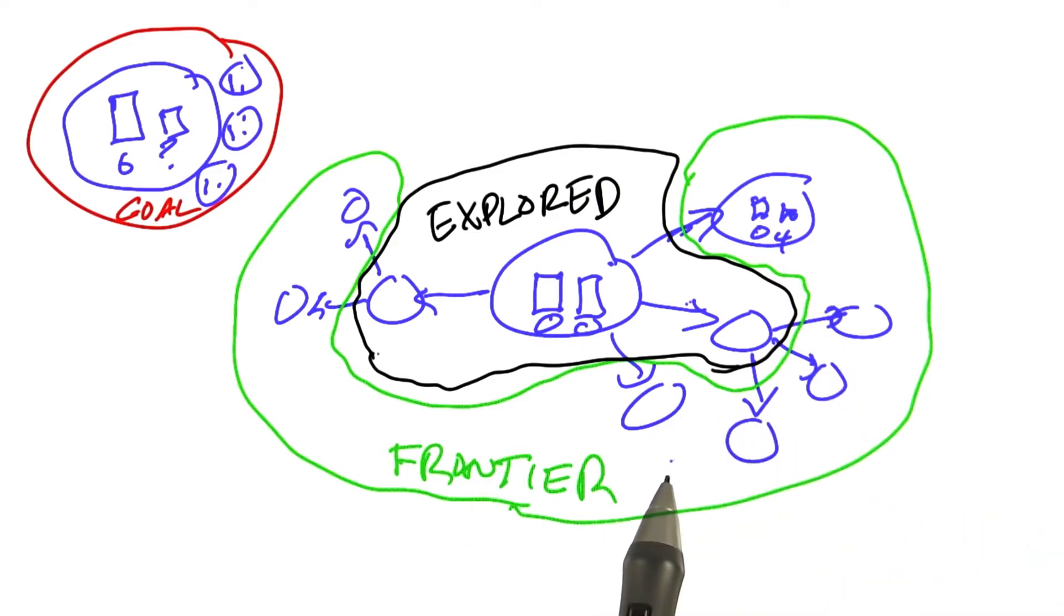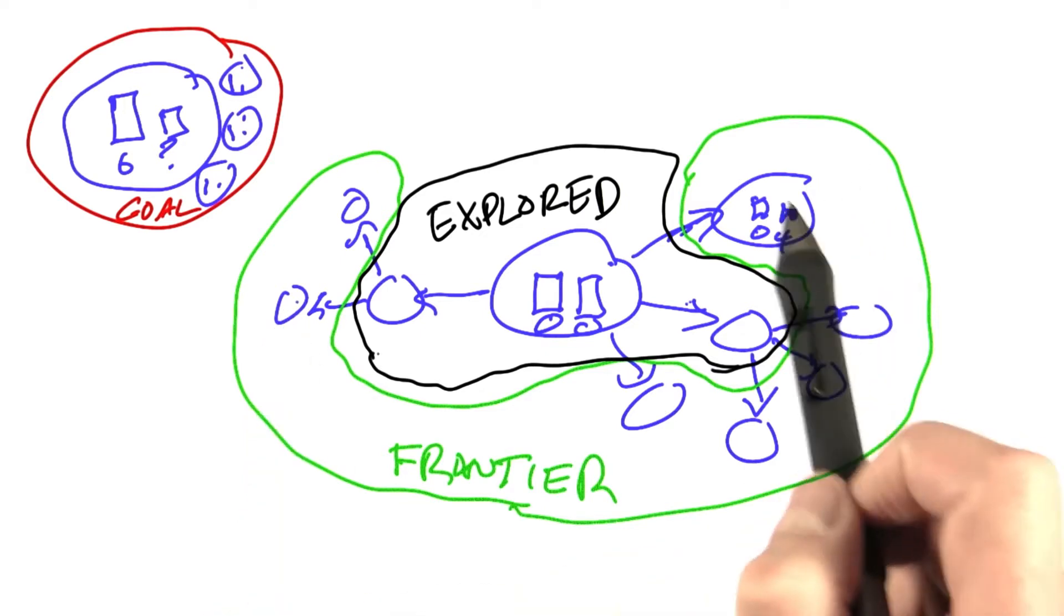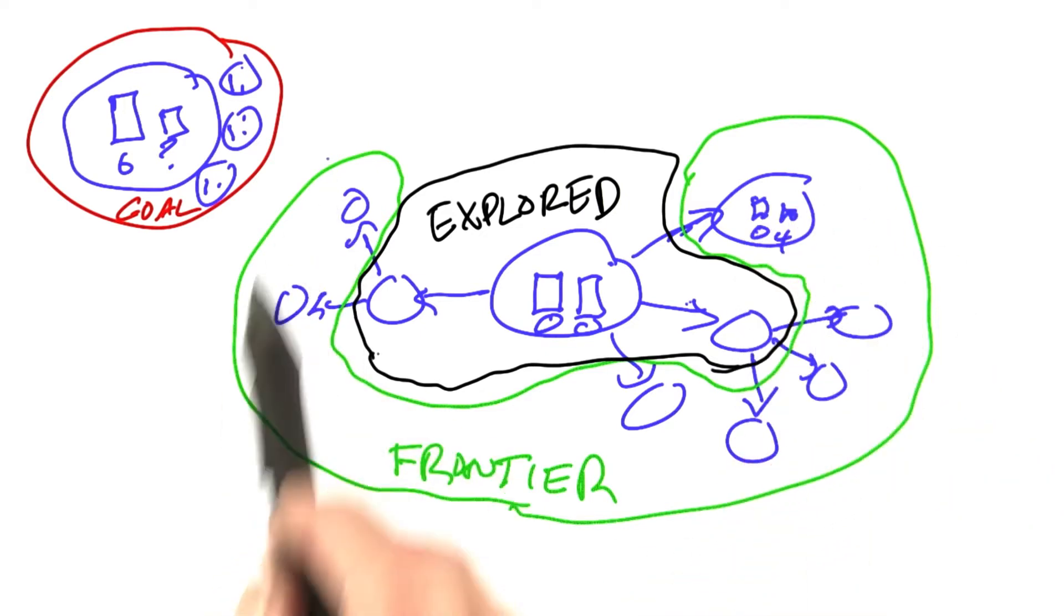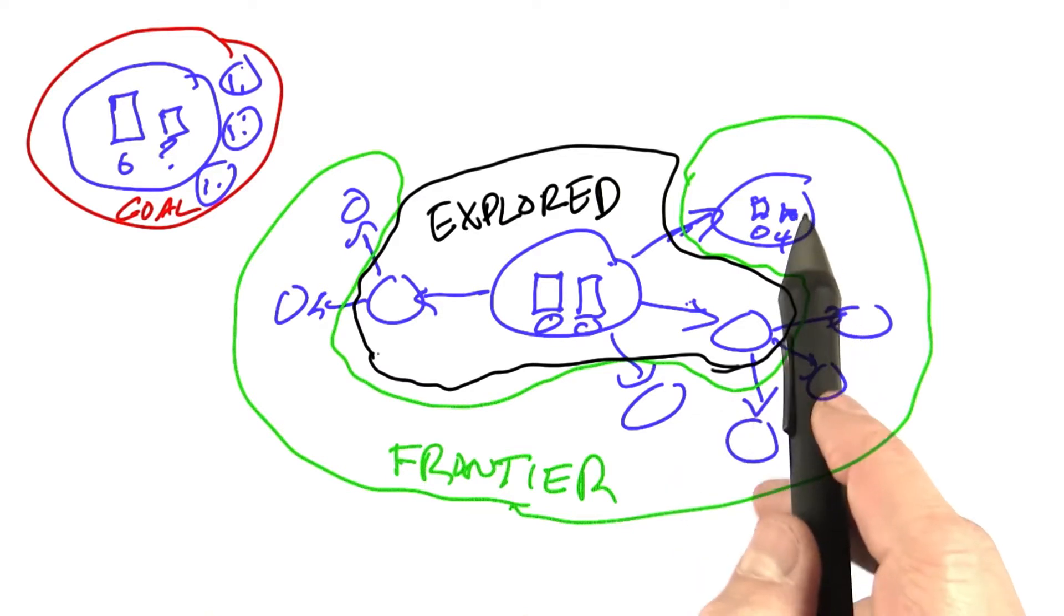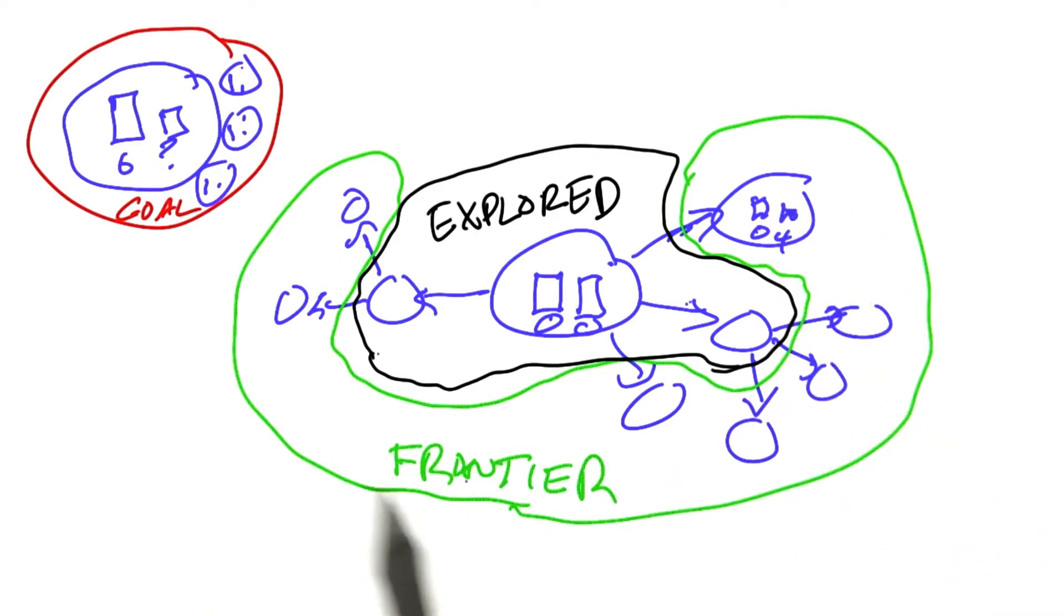We have the advantage here of being a computer that an individual explorer doesn't have. An individual explorer has to take one path, and if they decide they've gone in the wrong direction, they have to go all the way back. But a computer can store lots of states in memory, and so the computer exploration is more like a collection of explorers, all collectively expanding the frontier.